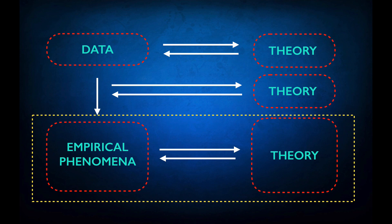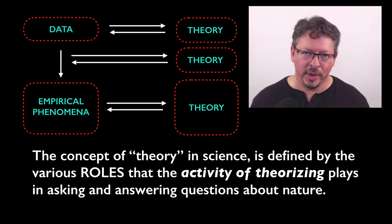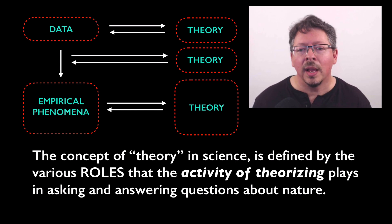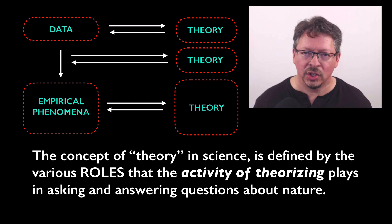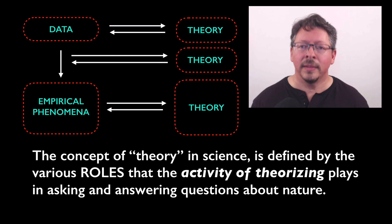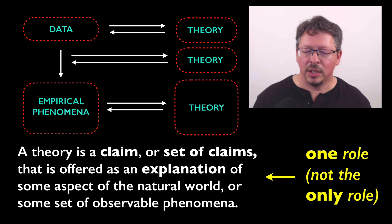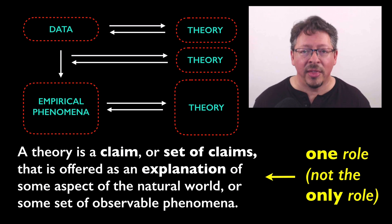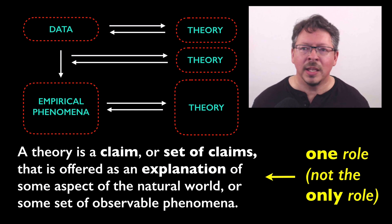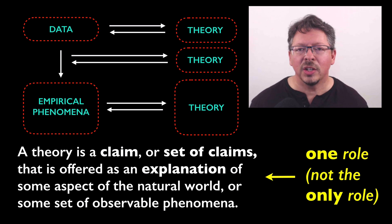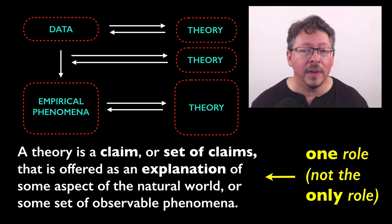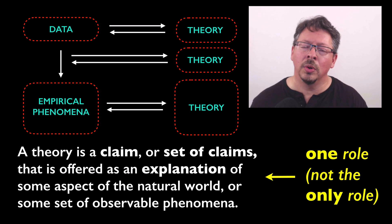And that's the bottom row in this diagram. So ultimately, my view is that the concept of theory in science is defined by the various roles that the activity of theorizing plays in asking and answering questions about nature. Once you understand these roles, then you understand what theories are and how they're used. One of these roles is as described at the top of this video: we posit theories to help us explain and understand phenomena that we don't fully understand yet. That is still true — it's just not the only role that theories play in science. The practice of science is a theory-laden exercise from top to bottom. Scientists rely on theories at all stages of the process of scientific inquiry, including the construction and interpretation of empirical phenomena. This admittedly complicates the story that we tell about the role of theory in science, but it's a more accurate story and, I think, a more interesting story.